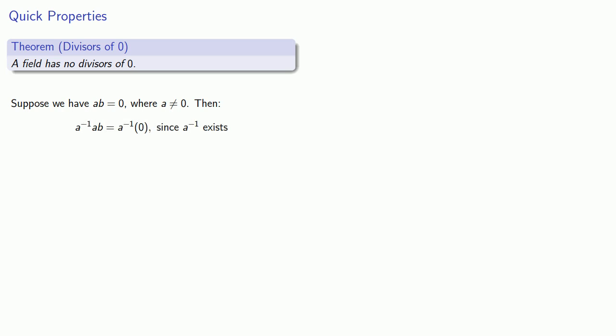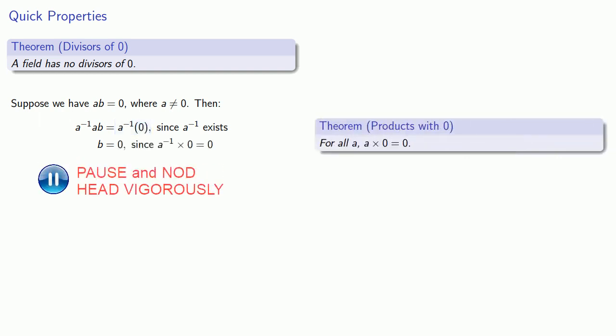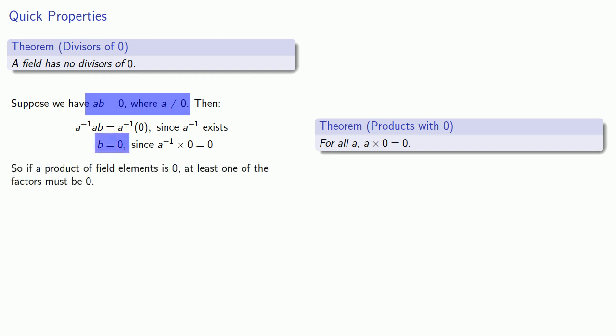A inverse times A is the identity. And since the product of something with 0 has to be 0, the right-hand side is going to be 0. And so if a product is equal to 0 where one factor is not 0, we know the other factor must be. Or we could say that if a product of field elements is 0, then at least one of the factors must be 0.